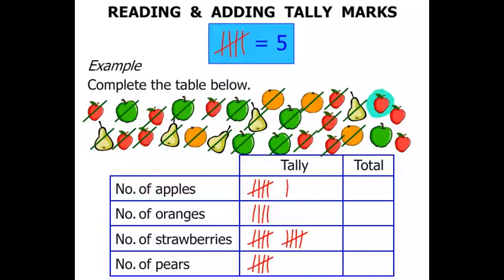Another apple. Another strawberry. Another strawberry. And then the final strawberry we have got. Terrific. So now we have completed the tally column.